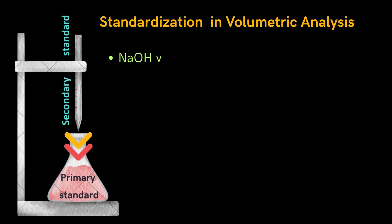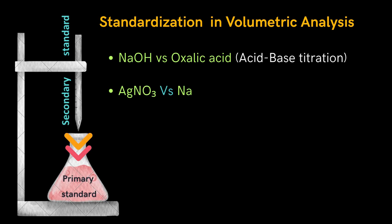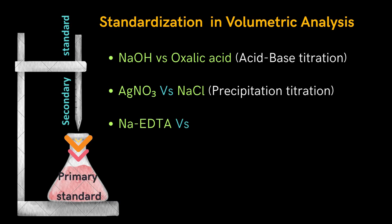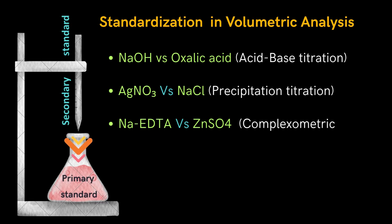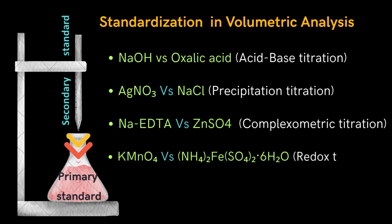Therefore, the given secondary standard is titrated with a primary standard substance. Examples are: NaOH vs. oxalic acid (acid-base titration); silver nitrate vs. sodium chloride (precipitation titration); sodium EDTA vs. zinc sulfate (compleximetric titration); potassium permanganate vs. ferrous ammonium sulfate (redox titration).